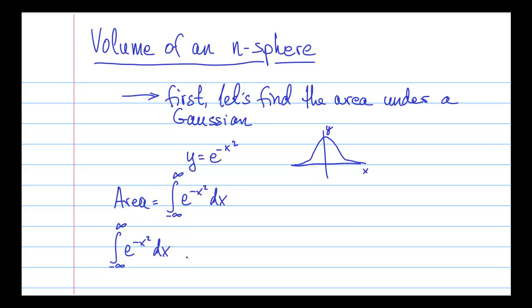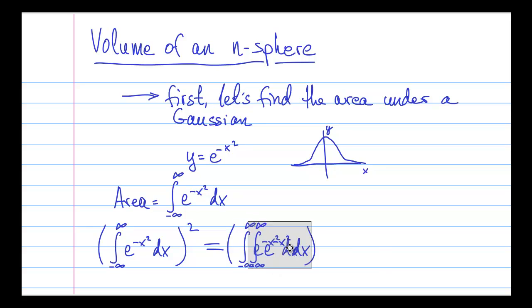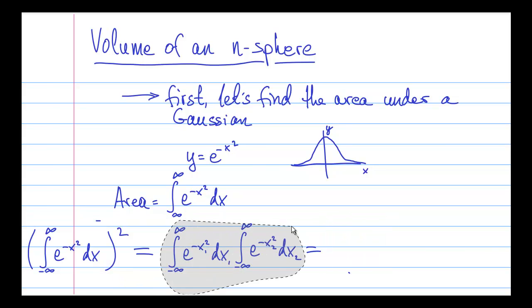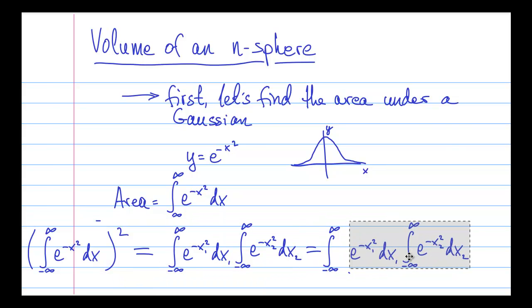Well, the trick is to, instead of trying to do this integral, to square the integral expression and work that out. So we square this integral expression, and we write this as a product of two integrals. We rename the variables in the two integrals, otherwise it would be confusing. And then we turn this product of the integrals into a double integral.